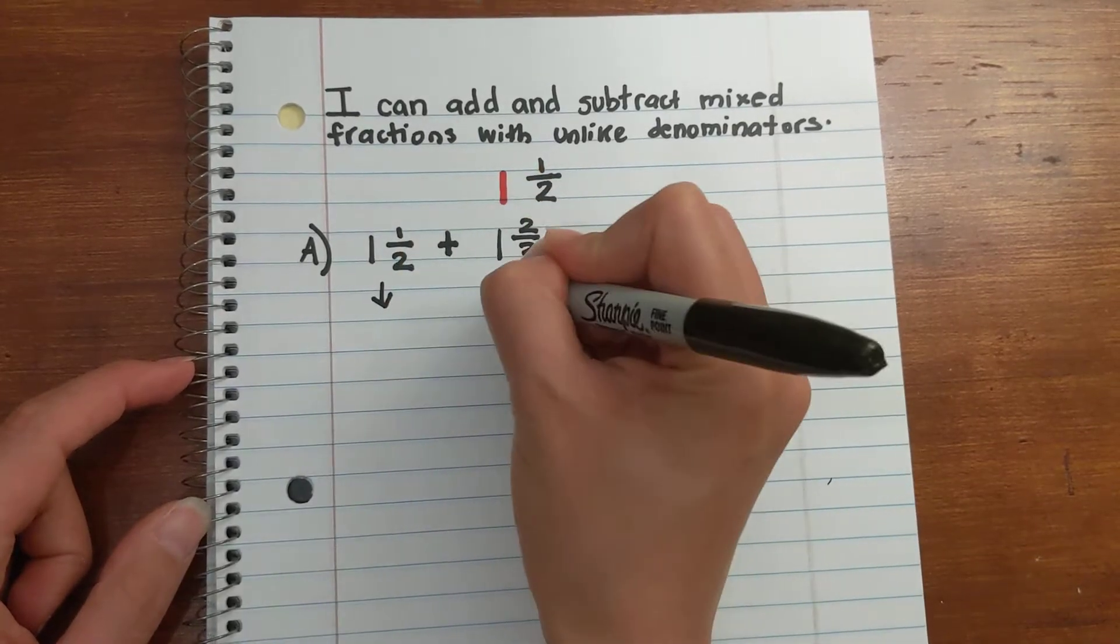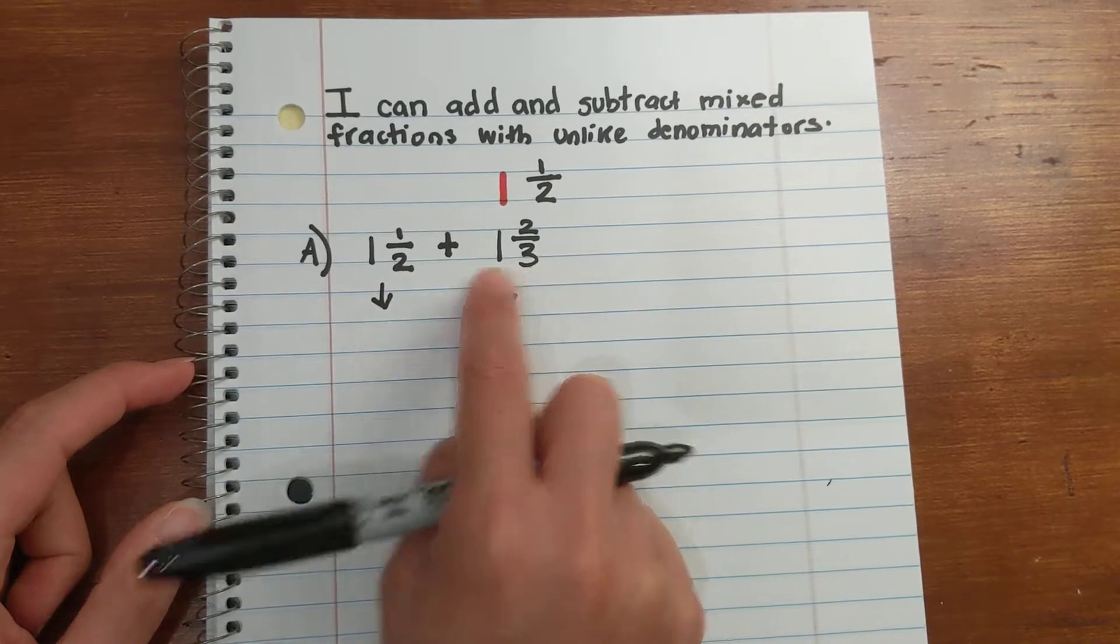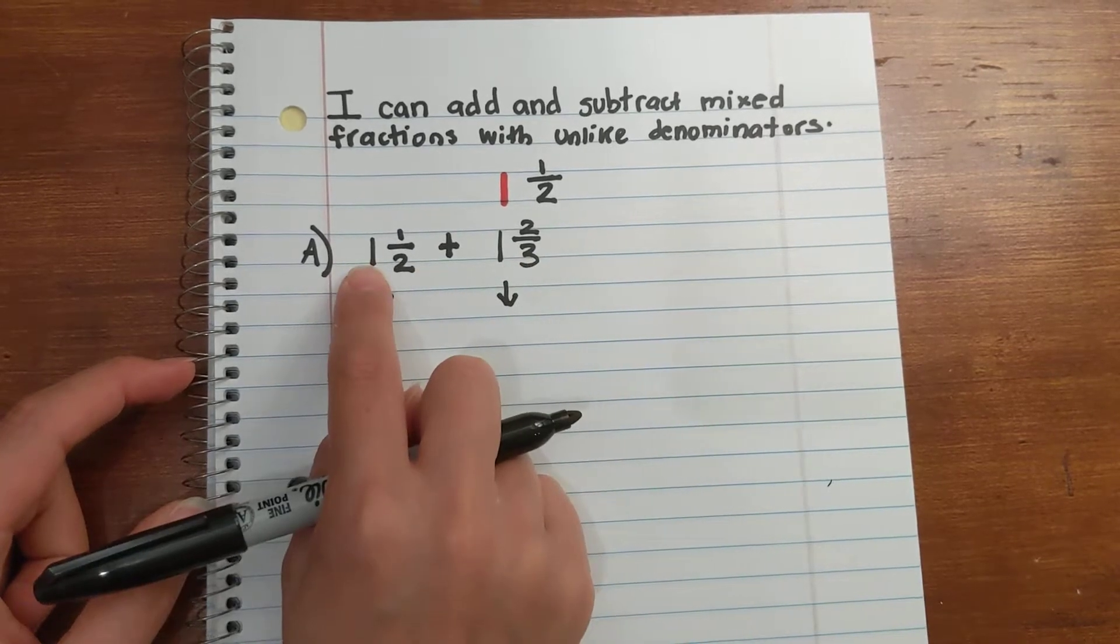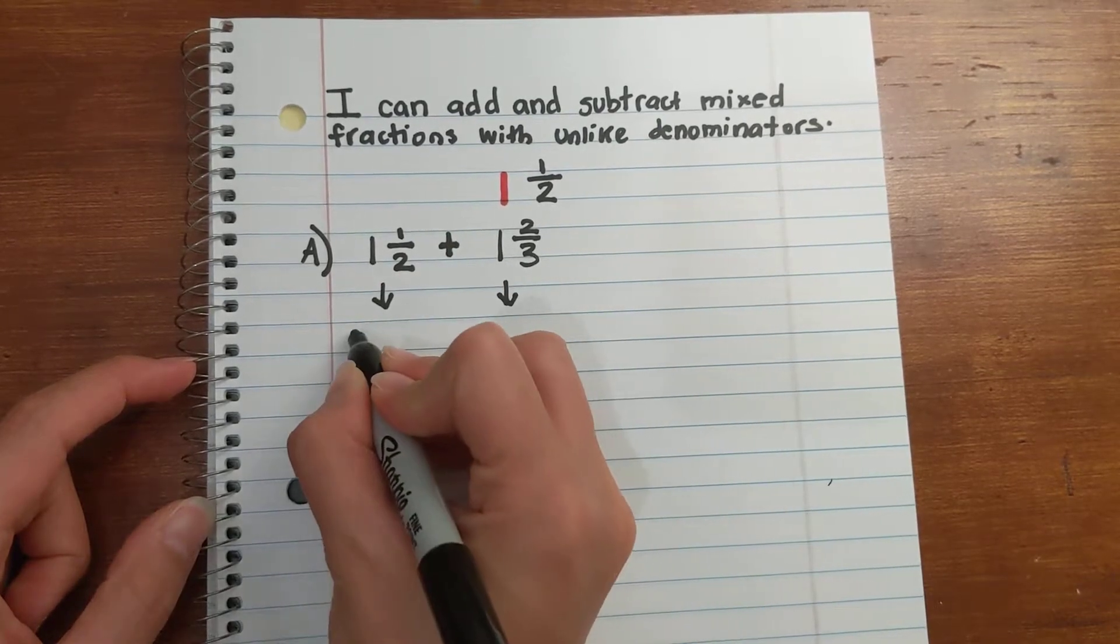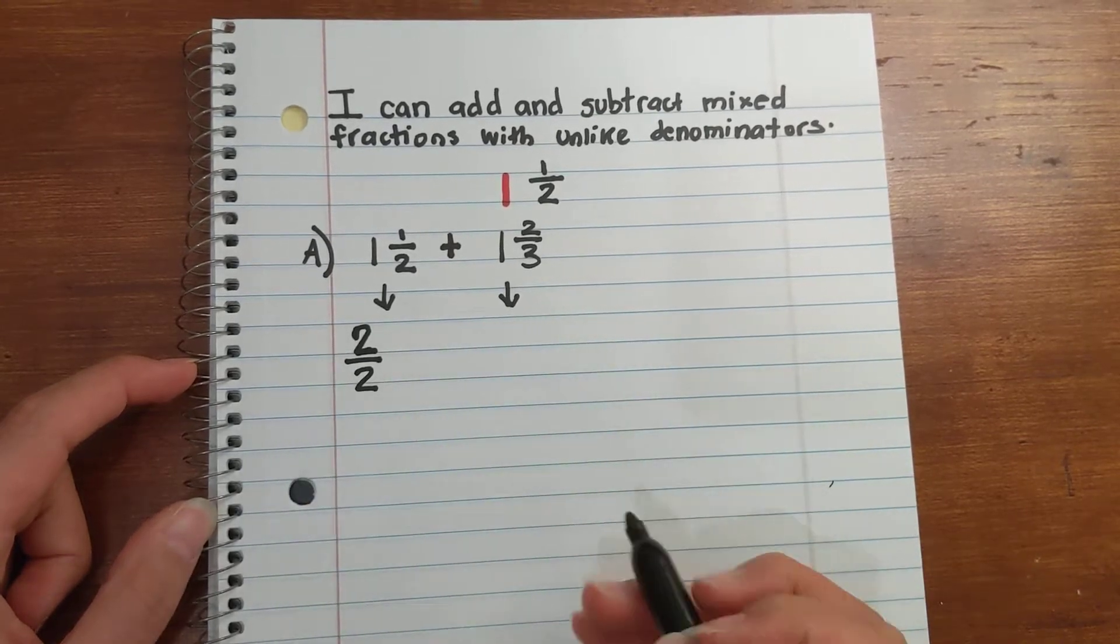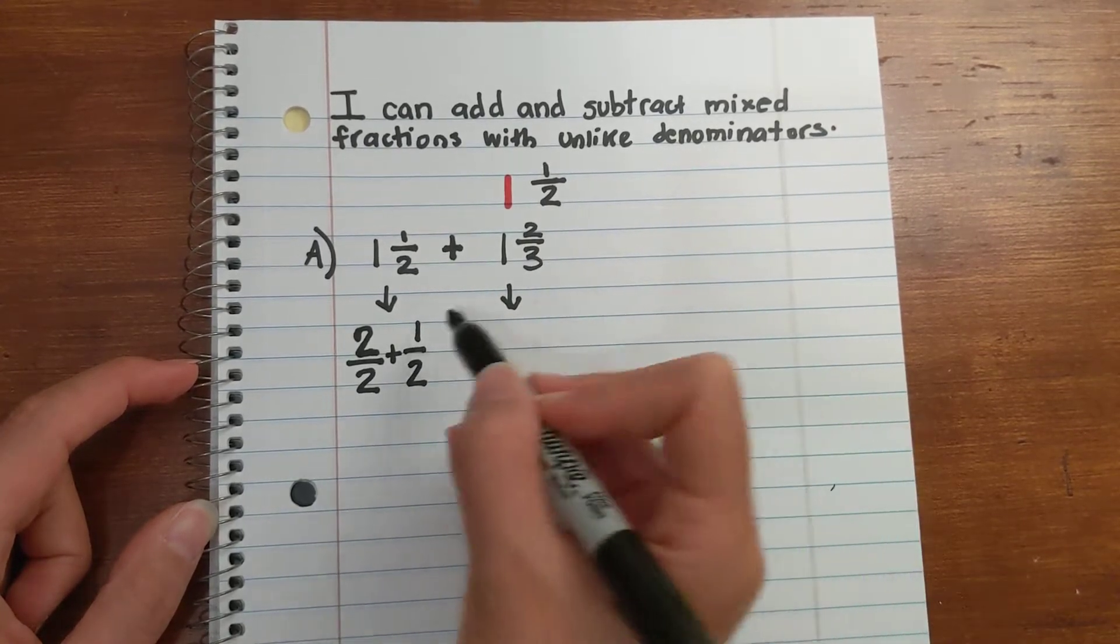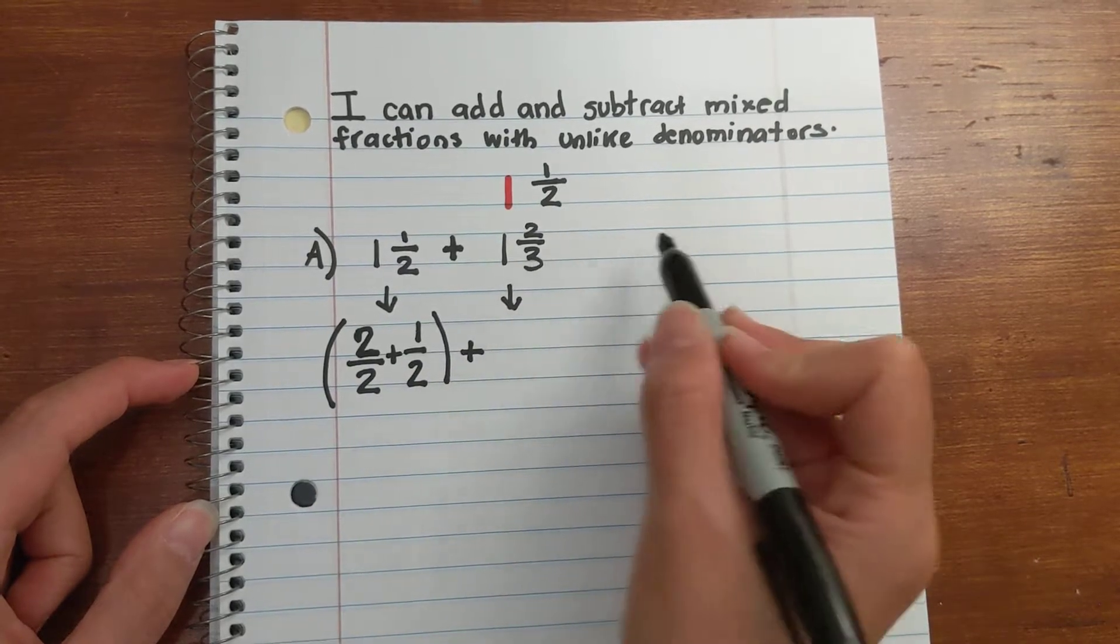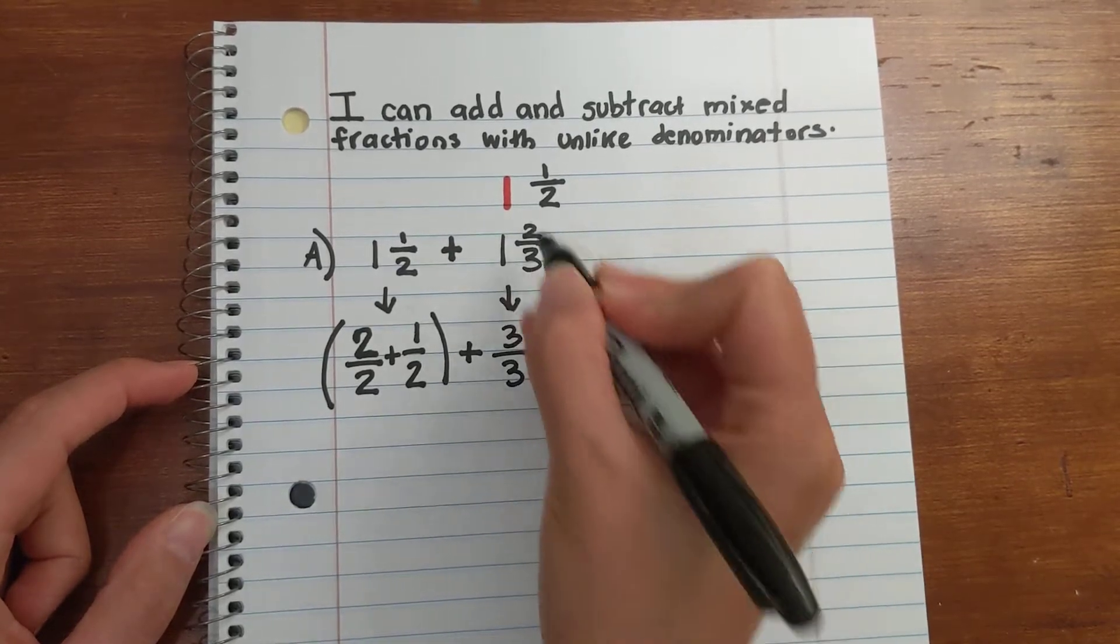So what I like to do is first rewrite this whole number and this fraction as a denominator of 2, as a denominator of 3. Think about a whole. If I had a whole to divide into two parts, I have 2 times 1 is 2 halves plus 1 half. Plus, in parentheses, my 1 - if I had a whole divided into three parts, I have 3 thirds plus 2 thirds.